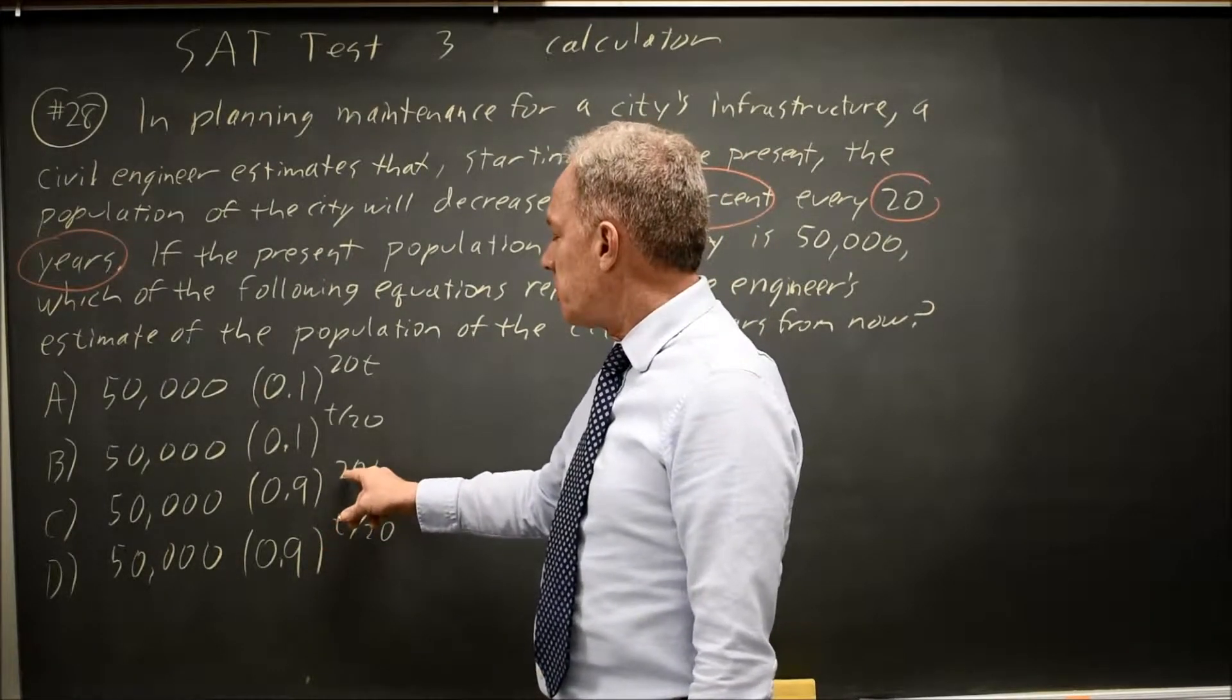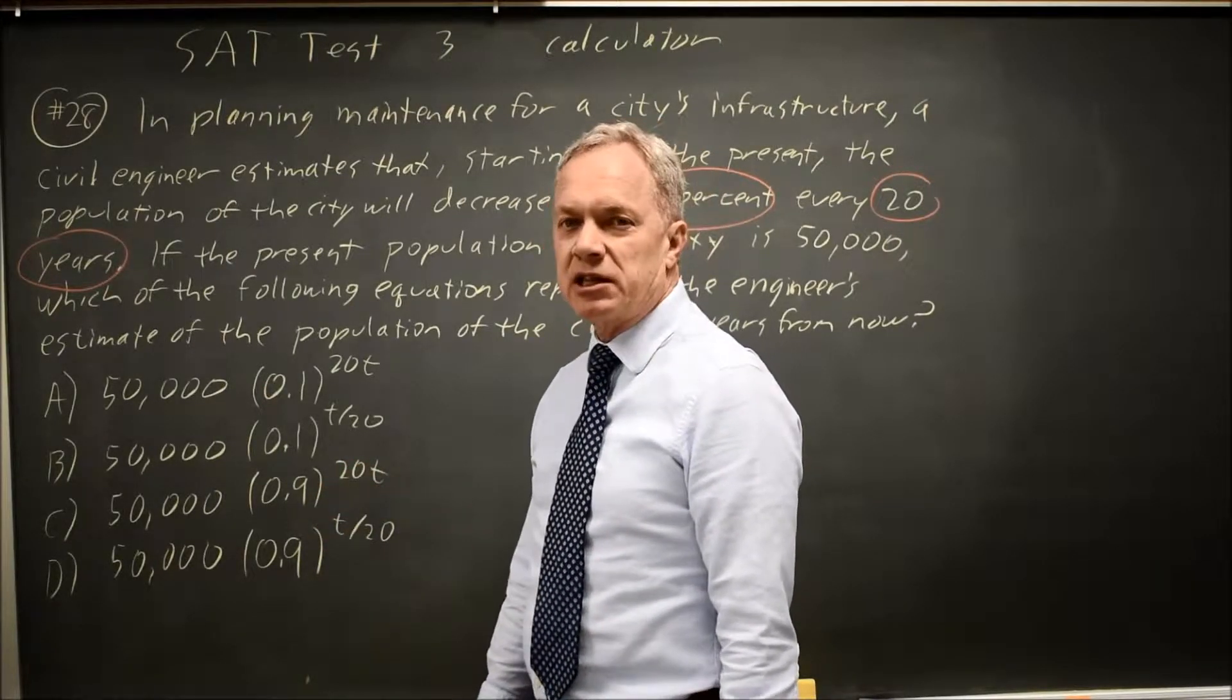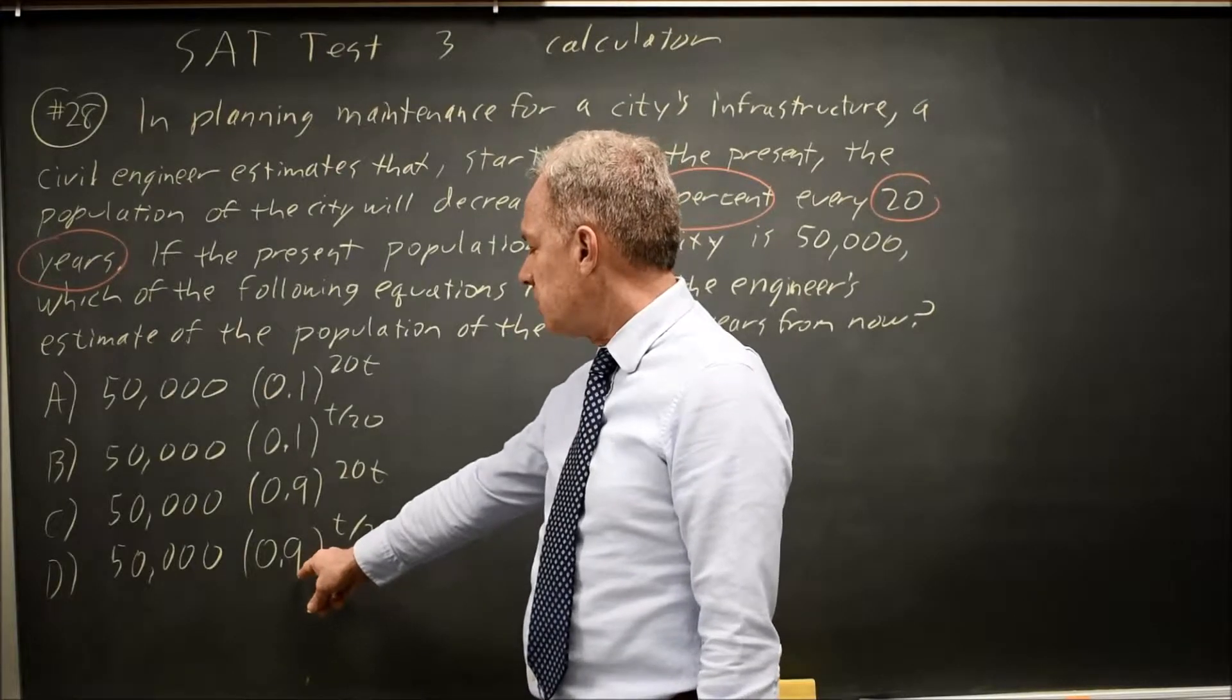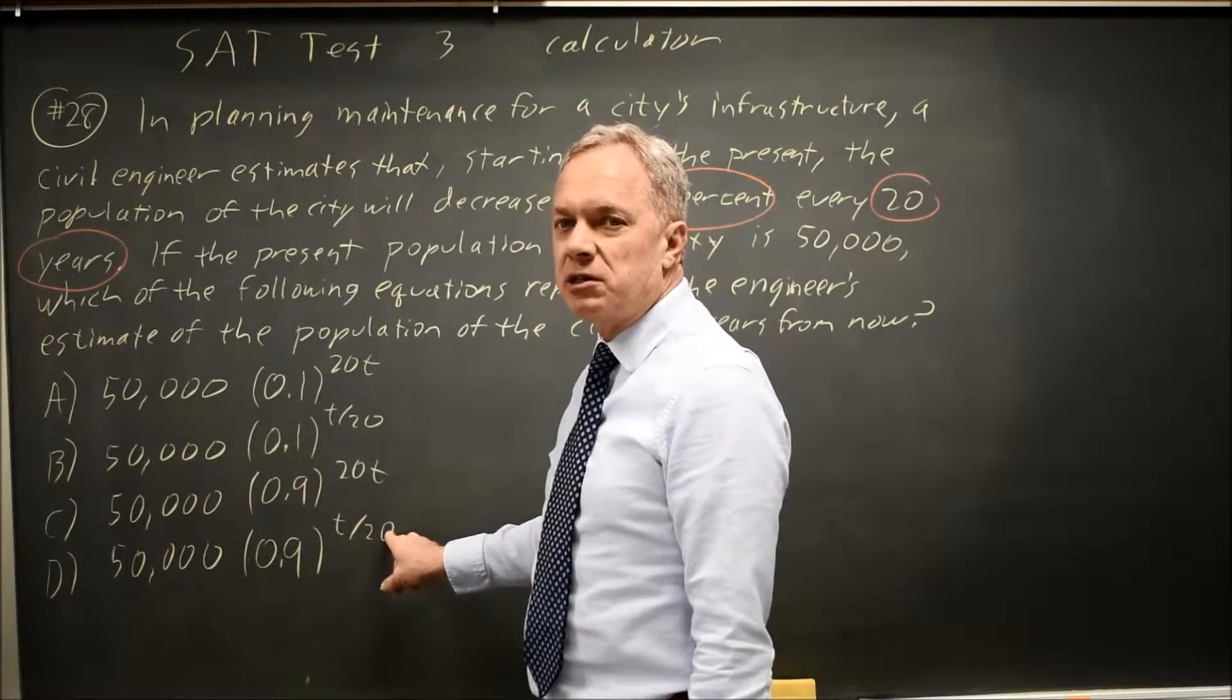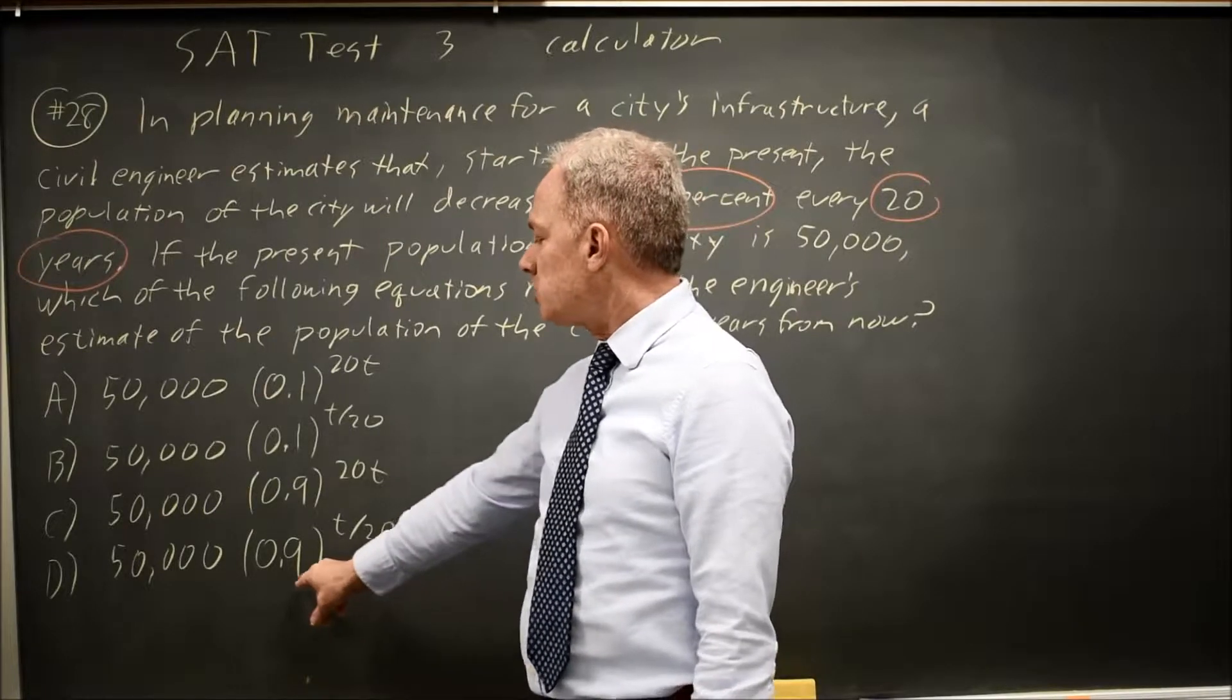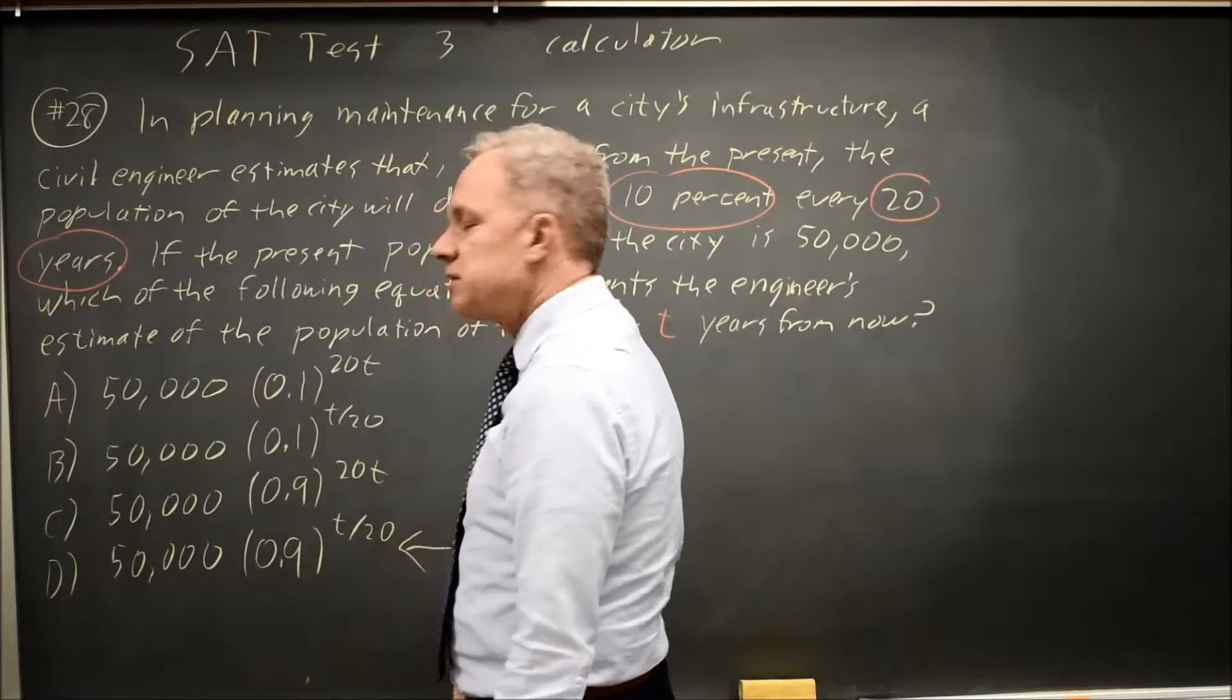At t equals 20, this is 0.9 to the 20 times 20 is 400, which is a whole lot less than 90% of your starting population. At t equals 20, this is 0.9 to the 20 over 20. It's 0.9 to the 1 is 0.9. So we multiply our current population by 0.9, and that gives us choice D.